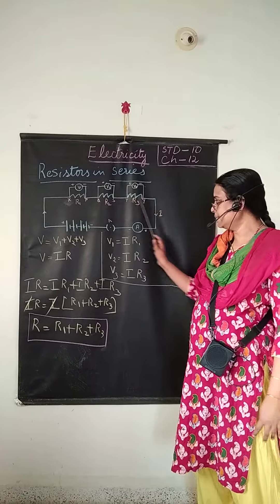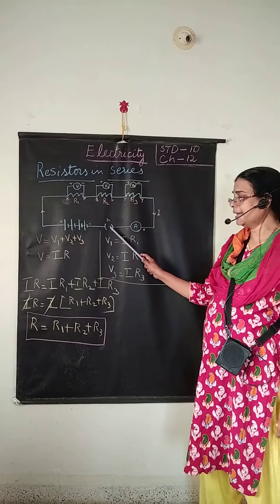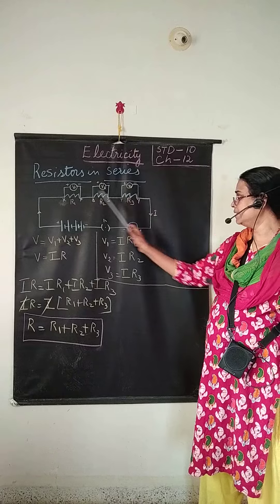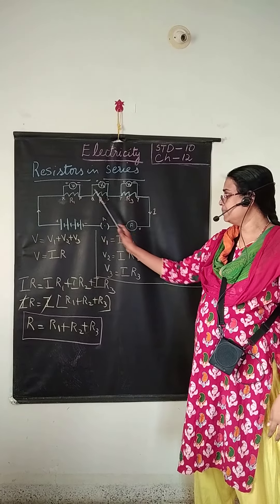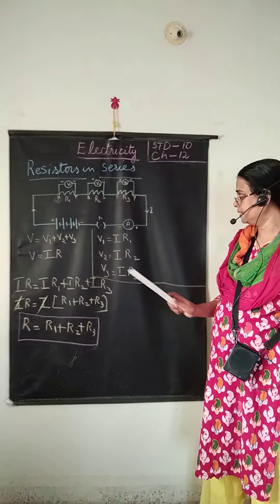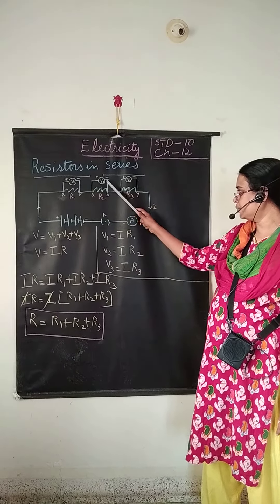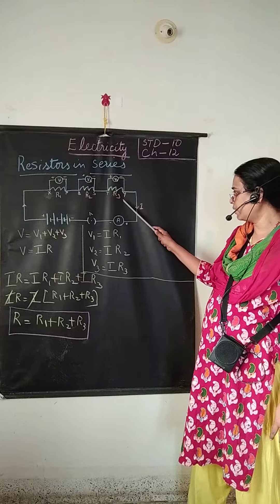After completing the circuit, if the plug key is pressed it shows the voltmeter reading in each voltmeter. So potential difference can be calculated from each voltmeter reading. V1 will be across R1, V2 across R2 and V3 across R3.